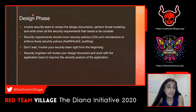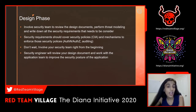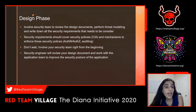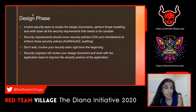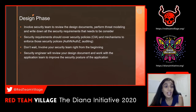Let's talk about the design phase first. It is critical to involve the security team to review the design document, perform threat modeling, and write down all the security requirements that need to be considered. When application requirements are defined, the corresponding security requirements should also be defined. Security requirements should cover security policies, CIA, and mechanisms to enforce those policies. You should involve a security engineer when you are creating a design document. The security engineer will review your design document and work with the application team to improve the security posture of the entire application.